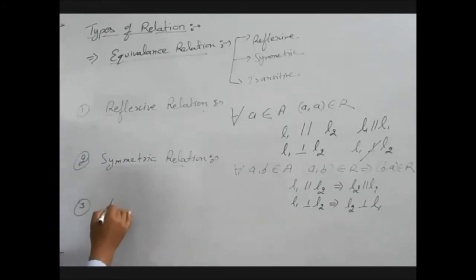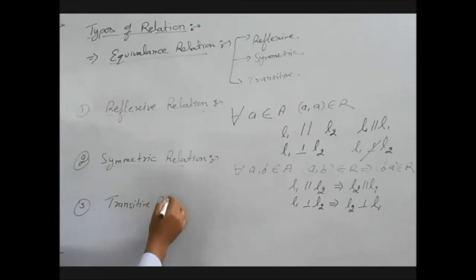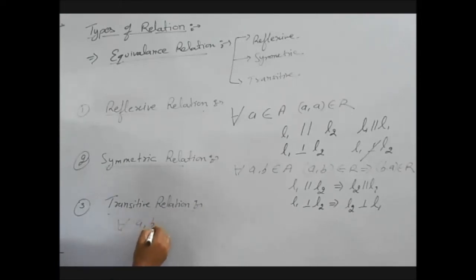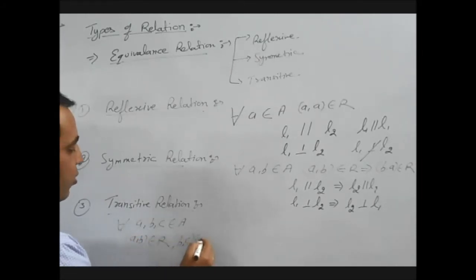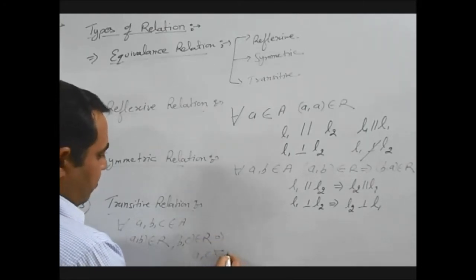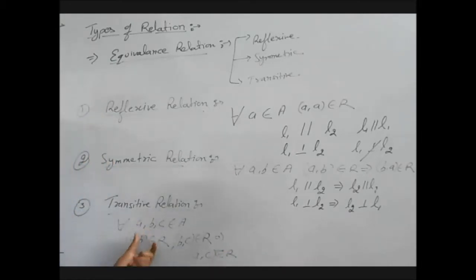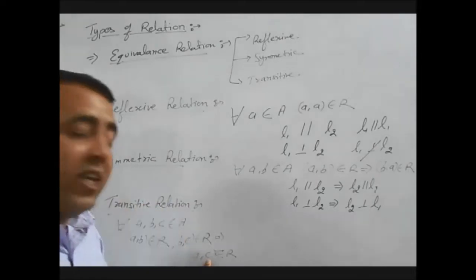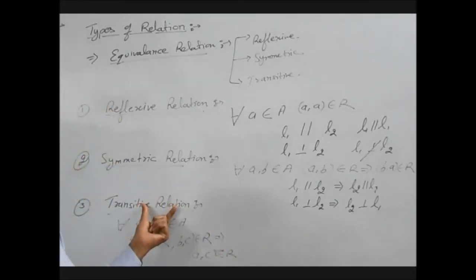Third is transitive relation. For all A, B, and C belonging to set A, if A is related to B and B is related to C, it implies A is also related to C. There are three elements A, B, and C: A is related to B, B is related to C. If it follows that A is also related to C, then it can be said that it is a transitive relation, otherwise not.